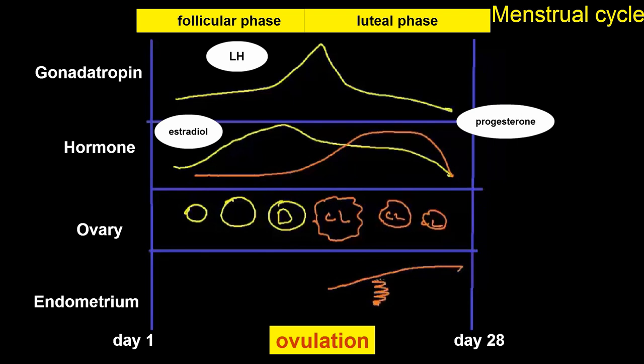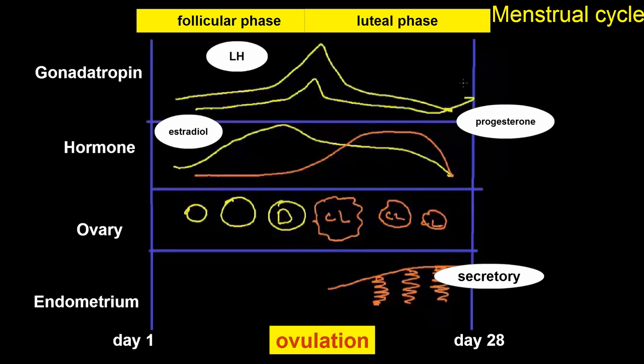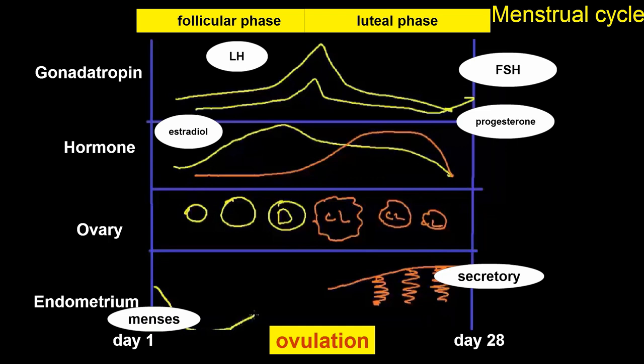At the end of the luteal phase, serum concentrations of estradiol, progesterone, and LH reach their lowest levels. In response, FSH begins to rise in the late luteal phase before the onset of menstruation to recruit the next cohort of follicles. If conception does not occur, the corpus luteum envelopes, progesterone and estrogen production declines, and menstruation occurs in response to low estrogen and progesterone levels. During menstruation, the entire endometrium is expelled and only the basal layer remains. During the follicular phase, rising estrogen levels stimulate endometrial cell growth, the endometrial stroma thickens, and the glands become elongated to form proliferative endometrium.